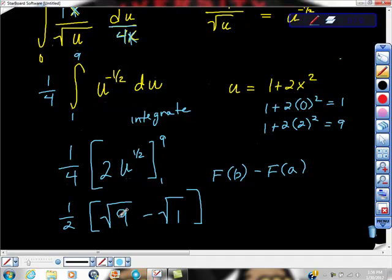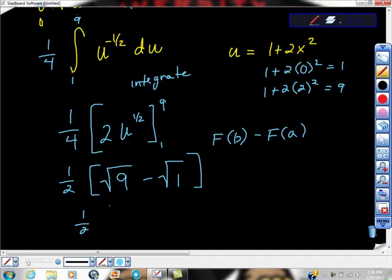So we know that the square root of 9 is 3, square root of 1 is 1, so 3 minus 1 is 2, so we get 1 half times 2, and our answer, the area, is 1.